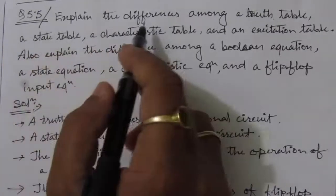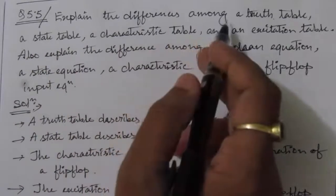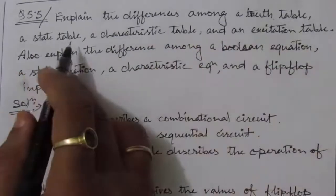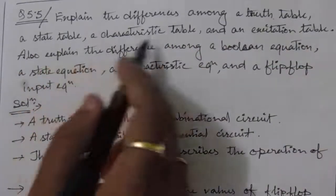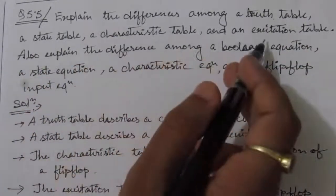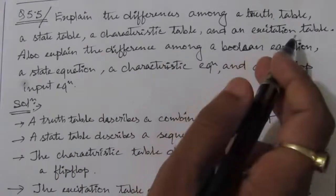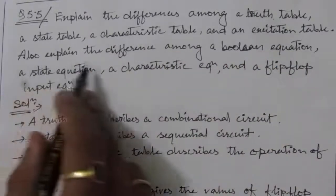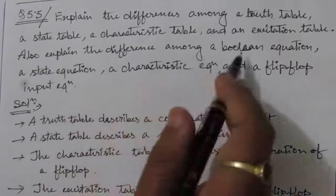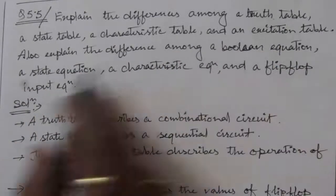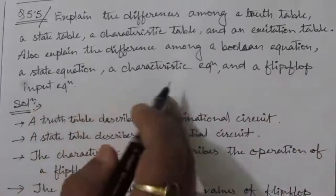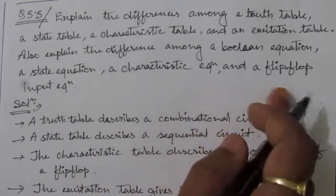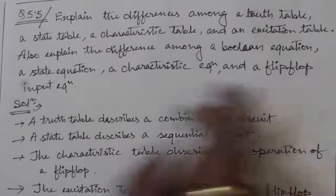The problem is: explain the differences among the truth table, a state table, a characteristic table, and an excitation table. Then we also have to explain the difference among a boolean equation, a state equation, a characteristic equation, and a flip-flop input equation.